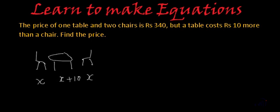And what is their total cost? Together, these three cost rupees 340. So what can we write from here? Here we have x plus x plus 10 plus x. So how many x's we have here? 1, 2, and 3. So 3x plus 10 is equal to 340.